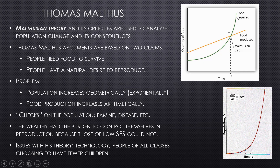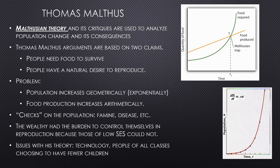Looking at the model, you can see what looks like a green J-curve. Keep in mind that Malthus was alive during the Industrial Revolution in England, when Britain was in stage two of the demographic transition model. His theory and its critiques are used to analyze population change, and his arguments are based on two claims: people need food to survive, and people have a natural desire to reproduce.